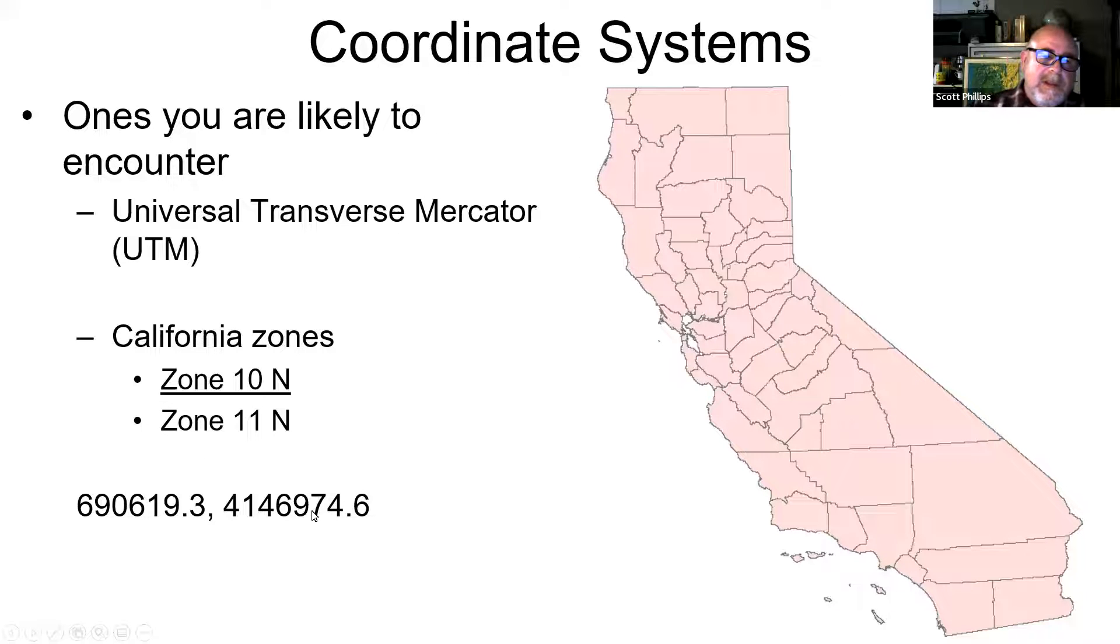These are what coordinates would look like if you're using UTM. For Turlock, which is in Stanislaus County, kind of in this area, it would be in the UTM zone 10, which is kind of on this half of California. The coordinates would look something like 690,000 meters east and 4 million something meters north, not degrees, sorry, these are in meters. So it'd be about 690,000 meters east and 4 million something meters north.